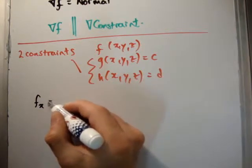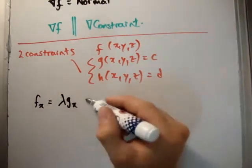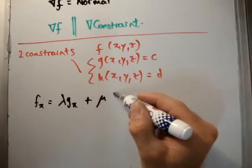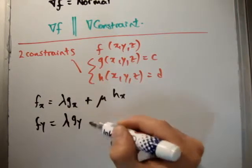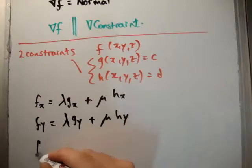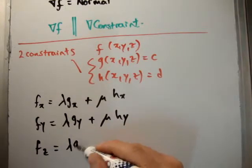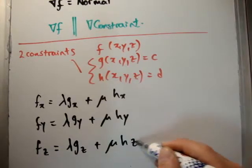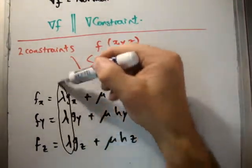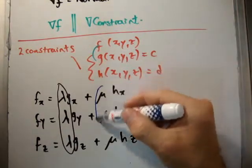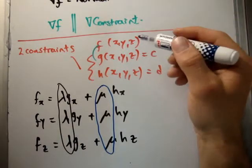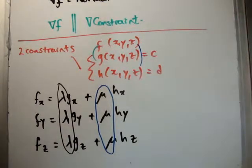So, just apply the gradient. So, we're going to get f_x is equal to λg_x plus μh_x. And we're going to get f_y is equal to λg_y plus μh_y. And f_z is equal to λg_z plus μh_z. Whereas, λ is the Lagrange multiplier which enforces the constraint on f subject to g. And μ is the Lagrange multiplier which enforces the constraint on f subject to h. So, we have two functions, we have two Lagrange multipliers, n functions, we have n Lagrange multipliers.